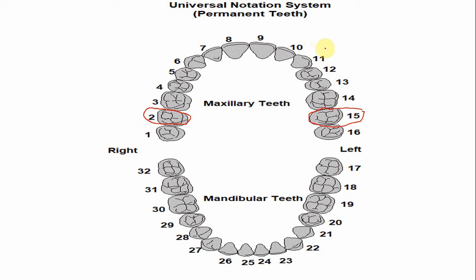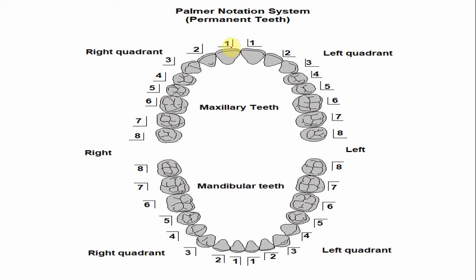In the Palmer notation system, the number begins from the midline. From the midline to the second molar, the number of the tooth is 7 for the right maxillary quadrant, with a symbol indicating the right maxillary quadrant. Similarly, for the left maxillary second molar the number is also 7, with a different symbol indicating the maxillary tooth of the left side.